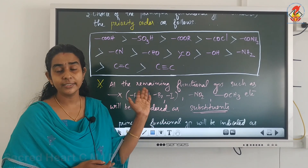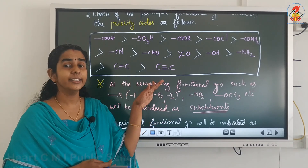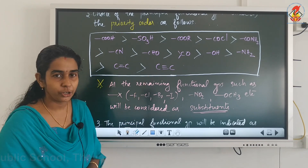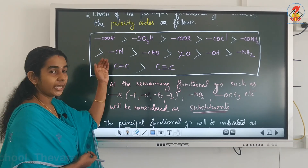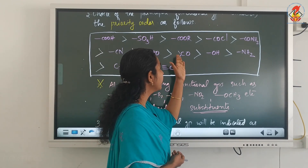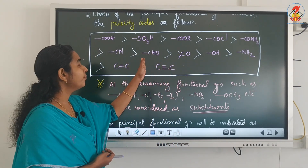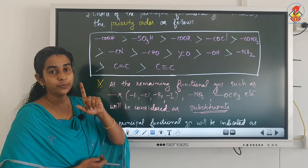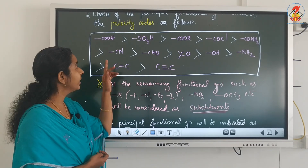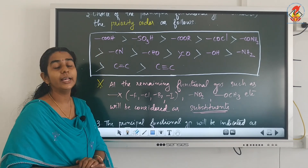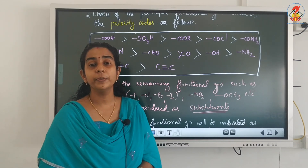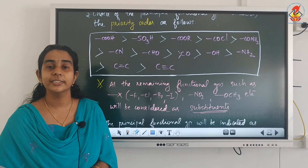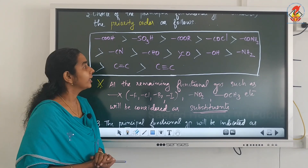Carboxylic acid and its derivatives are having the highest priority among all functional groups. Then, followed by the cyano group (CN), then the CHO group (aldehyde), then the keto group. So if there is an aldehyde and a cyano group, CN has higher priority — CN will go as the principal functional group as secondary suffix, and the aldehyde will go as a prefix, that is, as a secondary functional group.